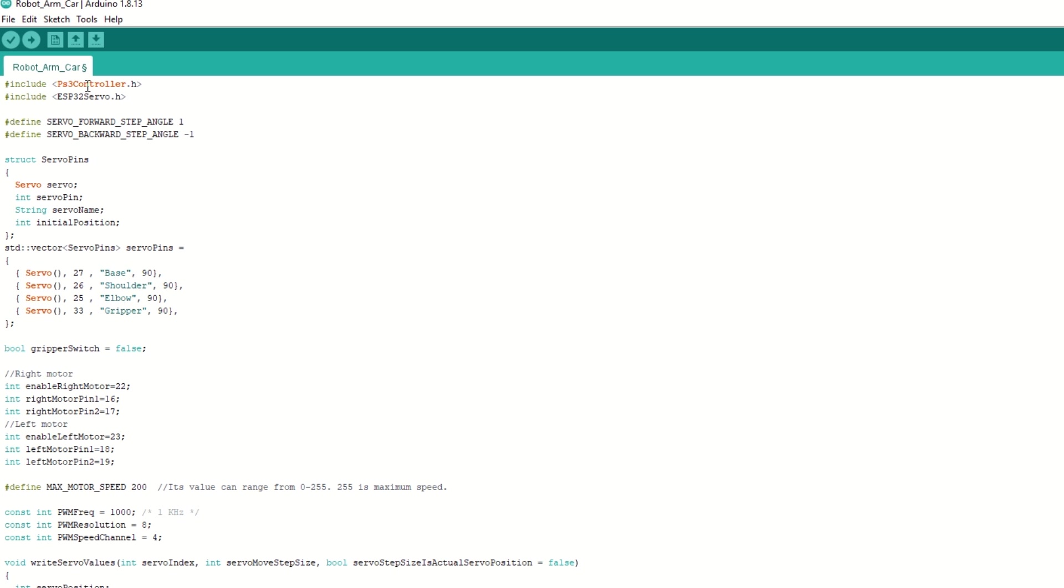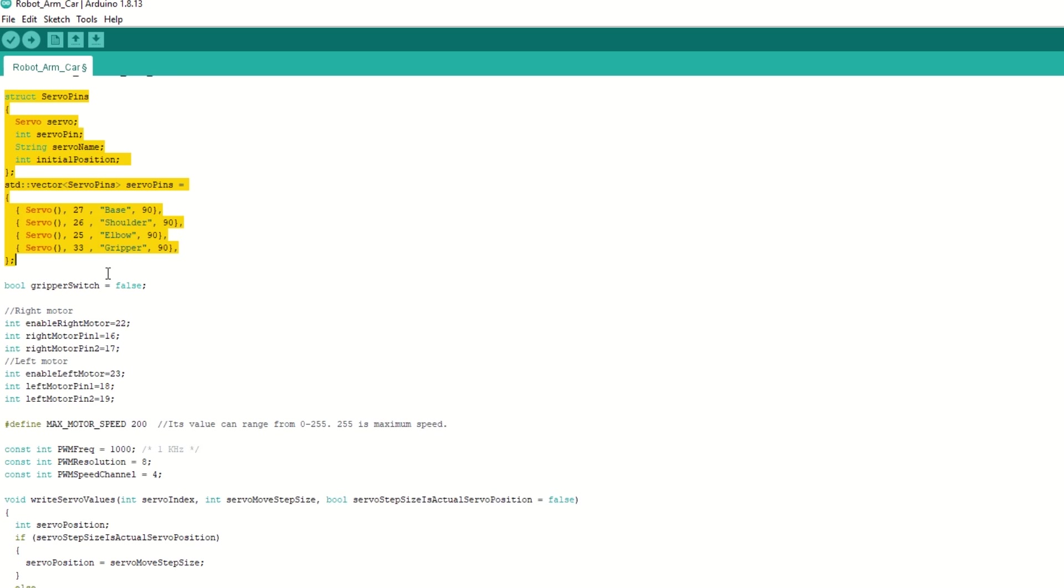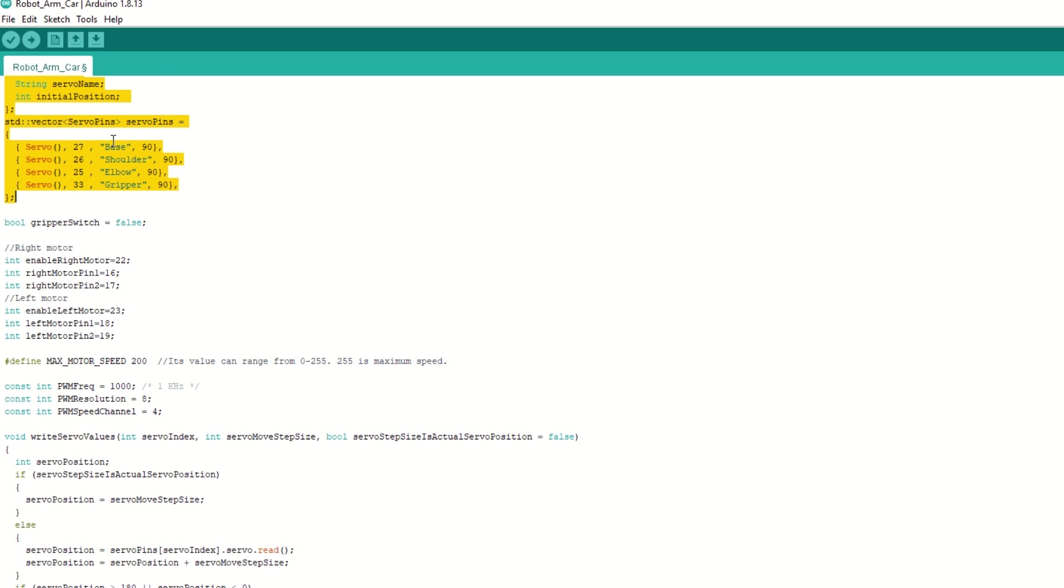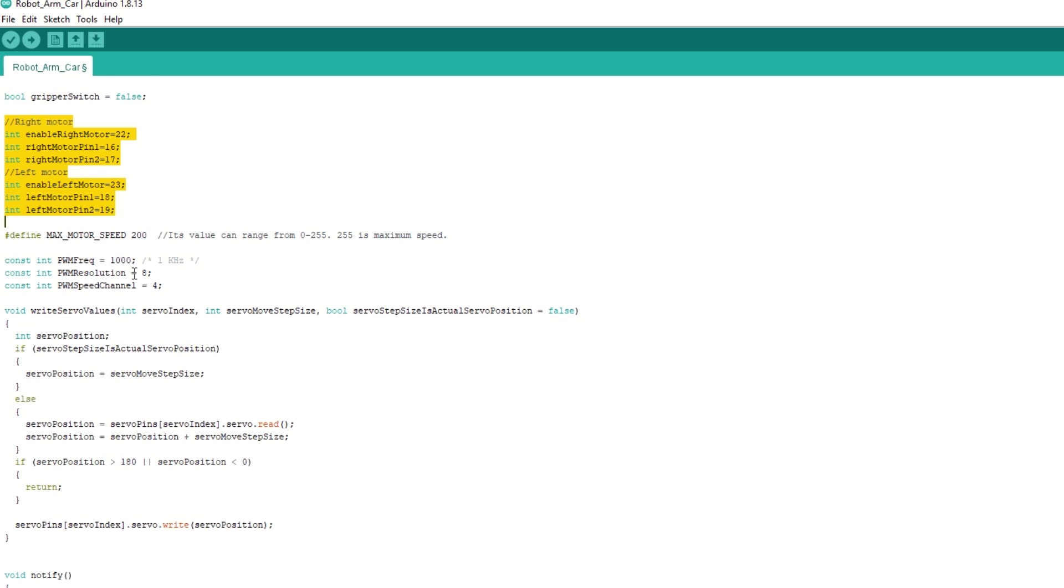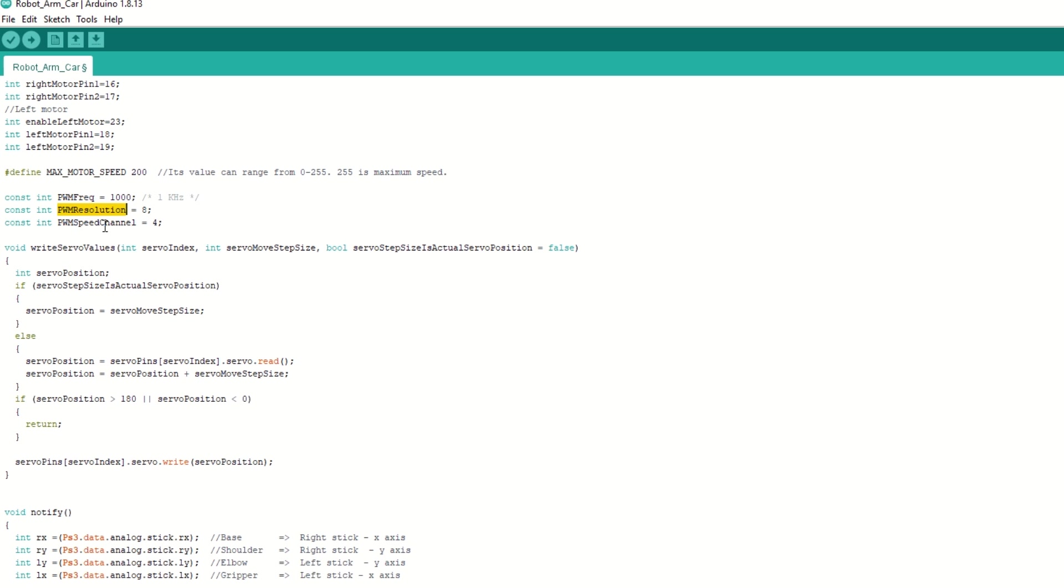Now, we need to include the PS3 controller library. Also, we need to include ESP32 servo library as well. We have defined servo forward step angle and backward step angle. We have created servo pin structure to store all servo details. We have defined pins for all 4 servo motors. If needed, you can change it here. We have declared gripper switch to control the gripper servo. We have assigned the right and left motor pins. We have defined max motor speed as 200. Its max value can be 255. You can change this as per your need. We have set the PWM frequency resolution and channel for speed.